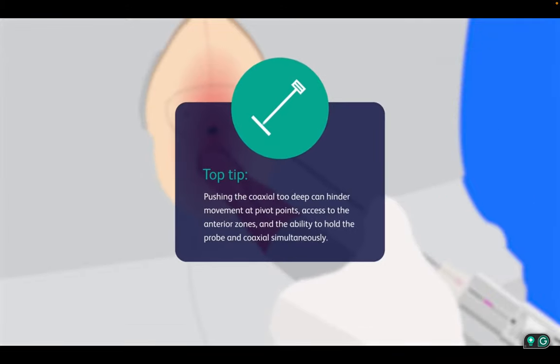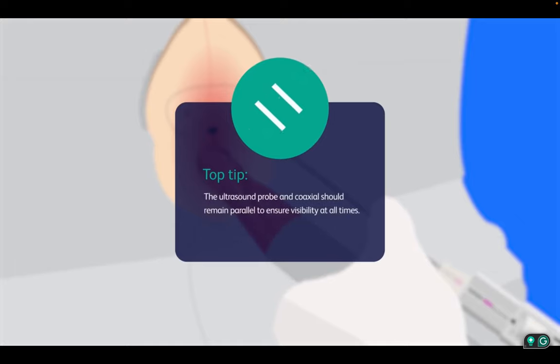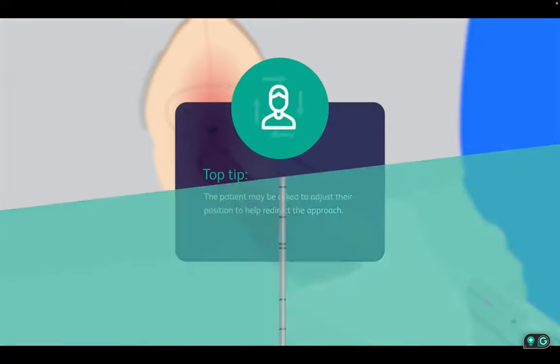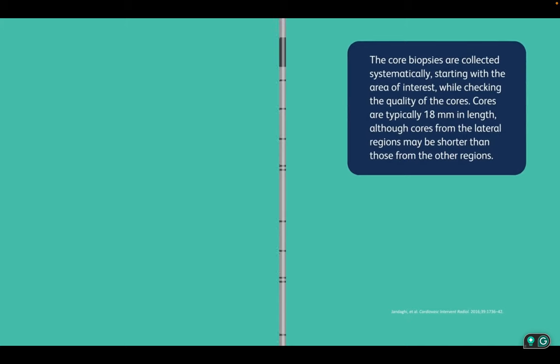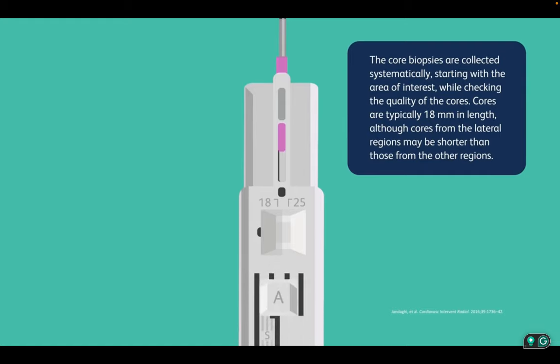The BD Marquis device's freehand movement allows easy access to the various sample areas. The ultrasound probe and coaxial should remain parallel to ensure visibility at all times. The patient may be asked to adjust their position to help redirect the approach. The core biopsies are collected systematically, starting with the area of interest, while checking the quality of the cores.